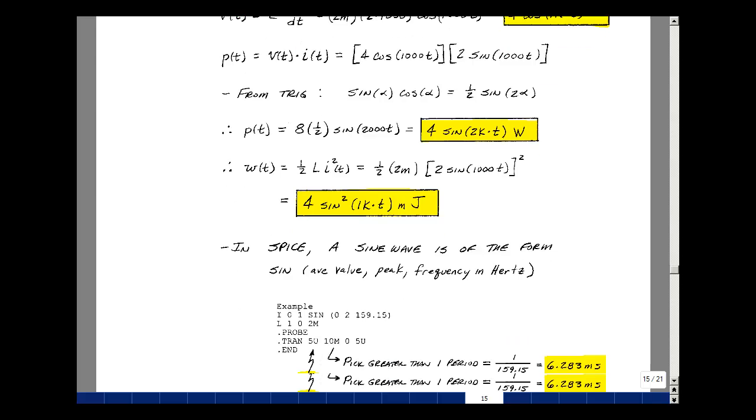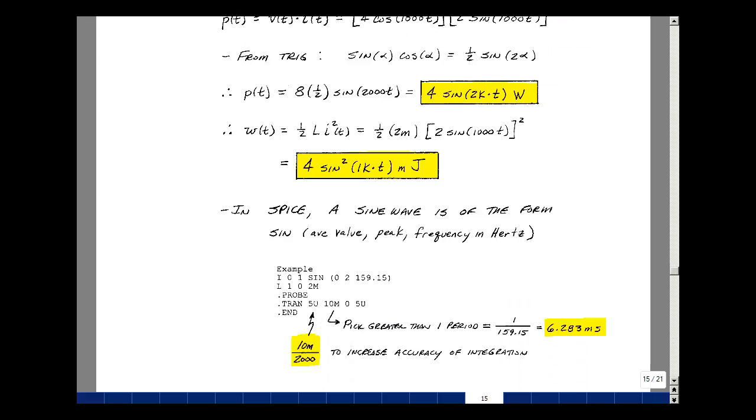In the SPICE program, there is a command for doing a sine wave. The terms that we need to capture are the average value, the peak value, and the frequency in hertz. So in our case here, we've got an average value of 0. In other words, we're above 0 as much as we are below 0. Amplitude of 2, so it goes up plus 2 and then down to minus 2, and the frequency of 159.15 hertz.